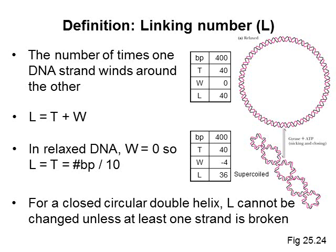We know there are 400 base pairs, and we assume that the DNA will adopt its most energetically favorable form and have a twist of 10 base pairs per turn. Note that DNA would rather make the supercoils than deviate from 10 base pairs per turn. So T is 40, and because W is minus 4, the linking number is 36.